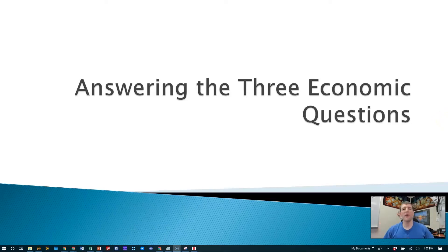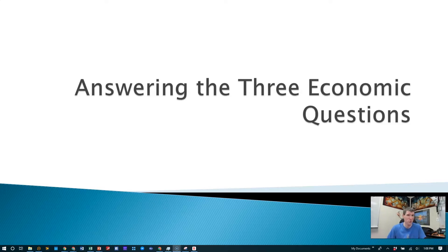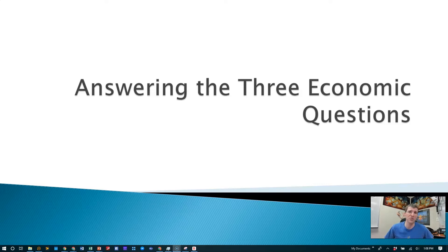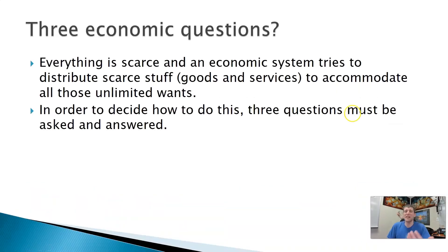Alright, today folks, we are talking about the three economic questions. We talked about the basic concepts — we got scarcity, the idea that there are finite resources to satisfy unlimited wants. Because of scarcity, we have to make choices. We only have so many resources — the factors of production: land, labor, capital, entrepreneurship. If we only have so much of all of those, we can only produce so much stuff. Scarcity forces choice upon us, and upon society's economic systems and countries as a whole.